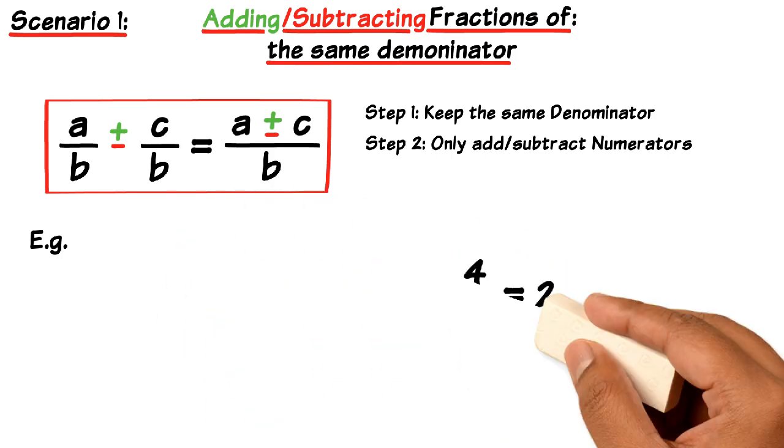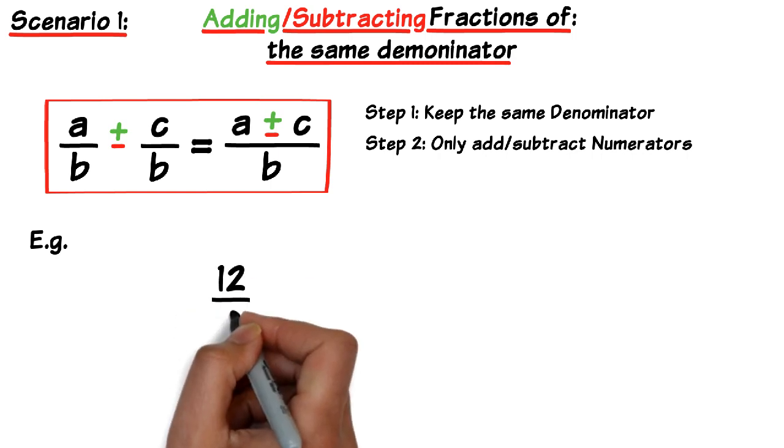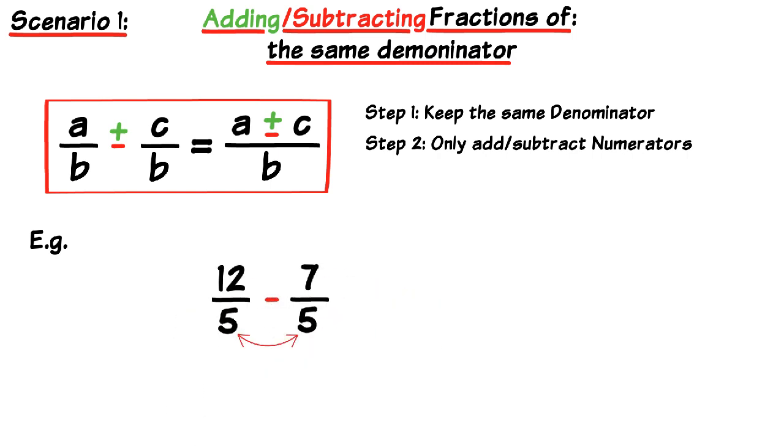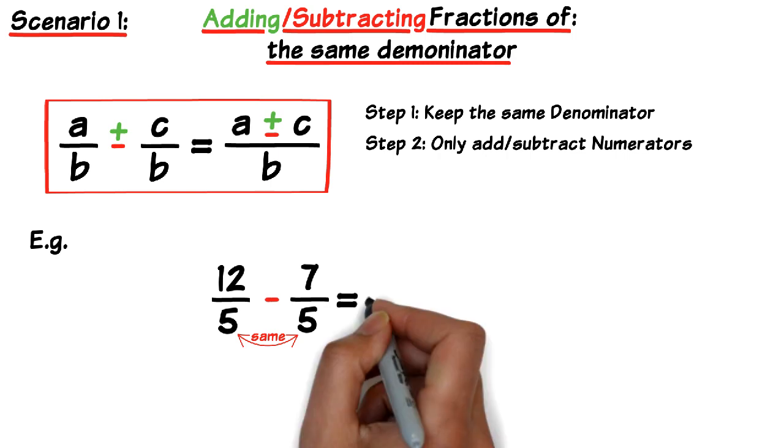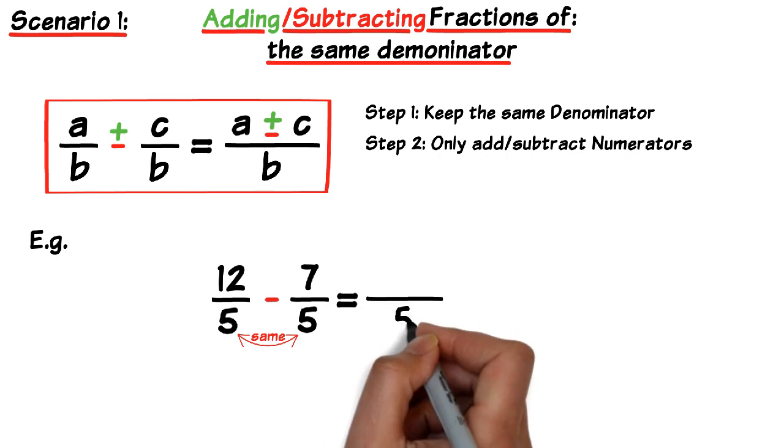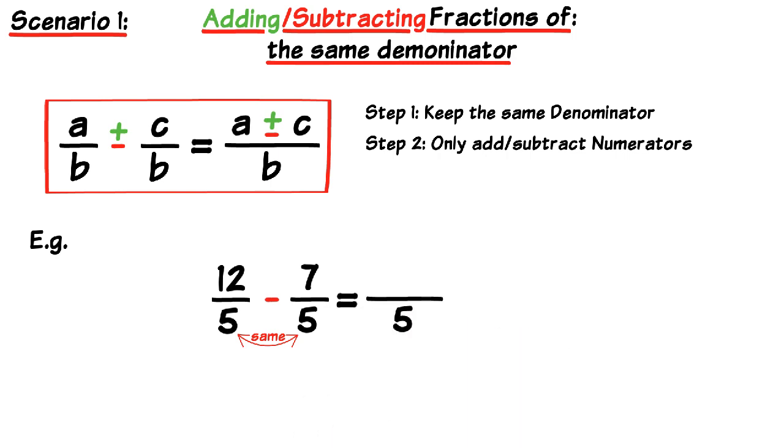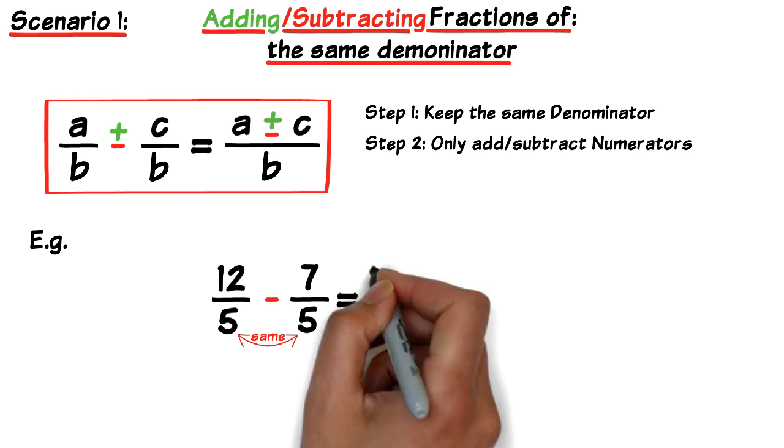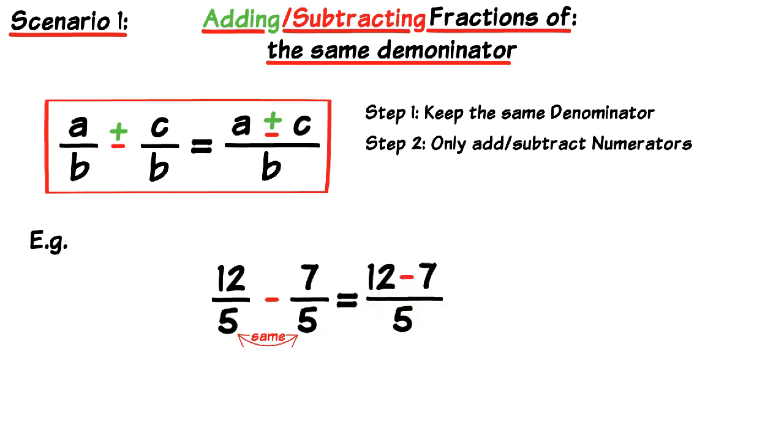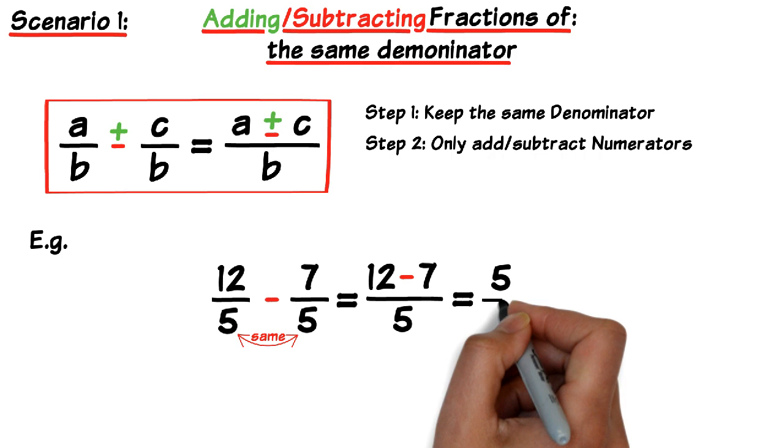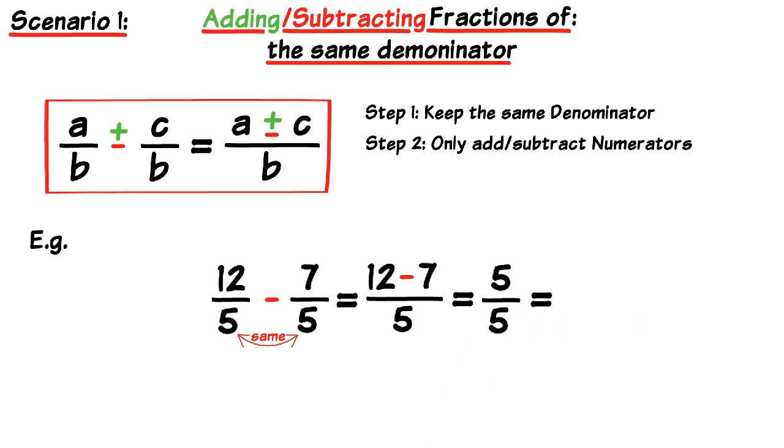Let's take a look at another example. Consider the fractions 12 over 5 take away 7 over 5. First we check to see if the denominators are the same. And yes they are. So that becomes the new denominator over 5. And for the new numerator we just take the subtraction of 12 take away 7. 12 take away 7 equals 5. So the new fraction becomes 5 over 5. Which is the same as one whole.